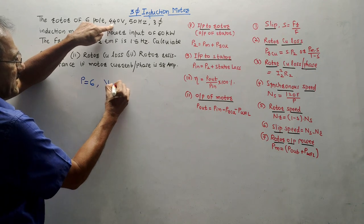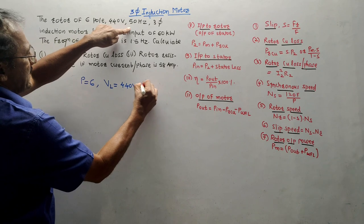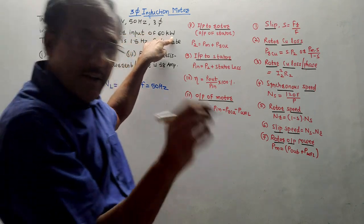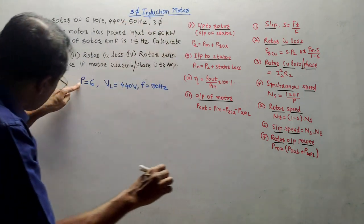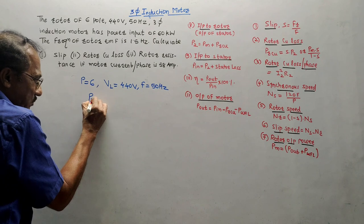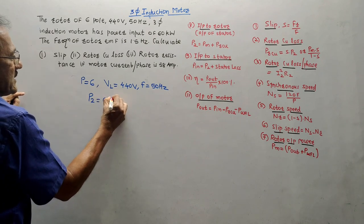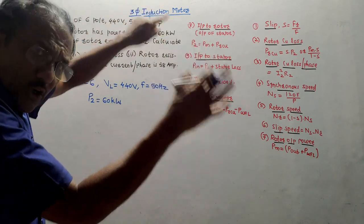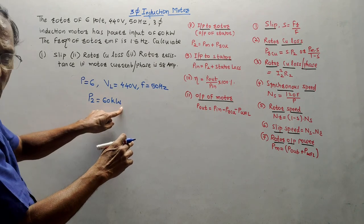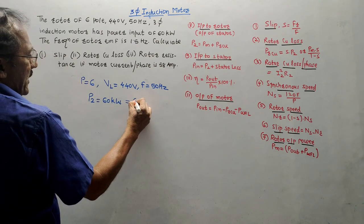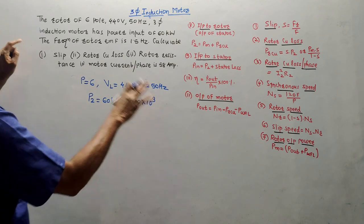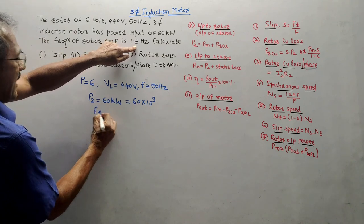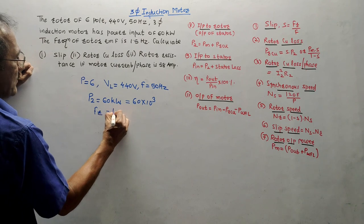440 volts is the line voltage — it is a 3-phase voltage of 440 volts. 50 hertz is the given value of frequency, so F = 50 Hz. It has a power input of 60 kilowatt. Since P denotes poles, power input to the rotor is denoted by P2, which is 60 kilowatt, that is 60 × 10³ watts. The frequency of rotor EMF is denoted by FR; FR = 1.5 hertz.